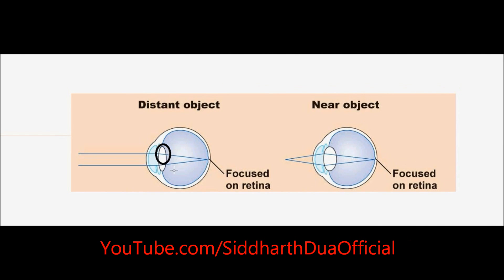Over here, you can see the eye lens flattened when you are seeing the distant object. Over here, you can see it rounded at the time of seeing a nearby object.